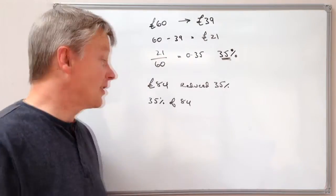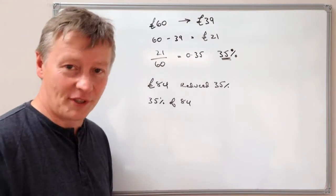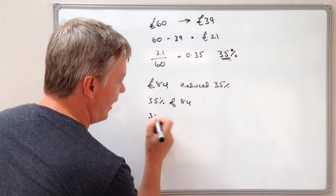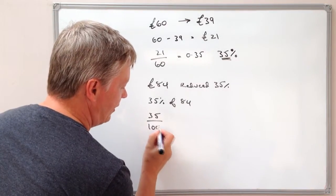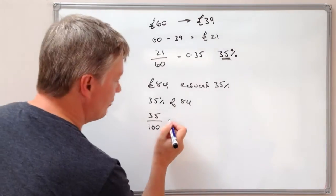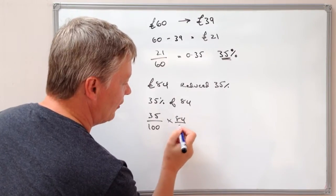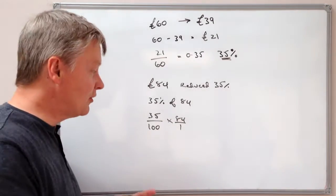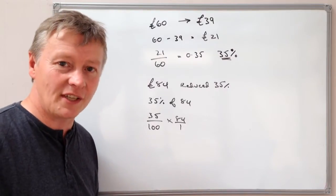Well what we need to know is what 35% is of £84. So what I need to do is calculate 35% of 84. And that's going to be as a fraction, 35 over 100 multiplied by 84.